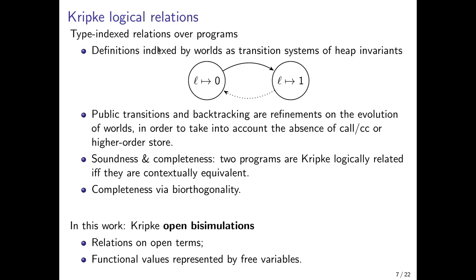Here we can see an example of such a world. In the left state, the location L must store 0 — this invariant is enforced — and in the right state it must store 1. There are two kinds of transitions: the solid line, being what we call a public transition, and the dotted one, a private one. Using these two kinds of transitions, we can perform finer reasoning to exploit the absence of call-CC. Public transition and backtracking are refinements on this world to exploit the absence of call-CC or higher-order store.